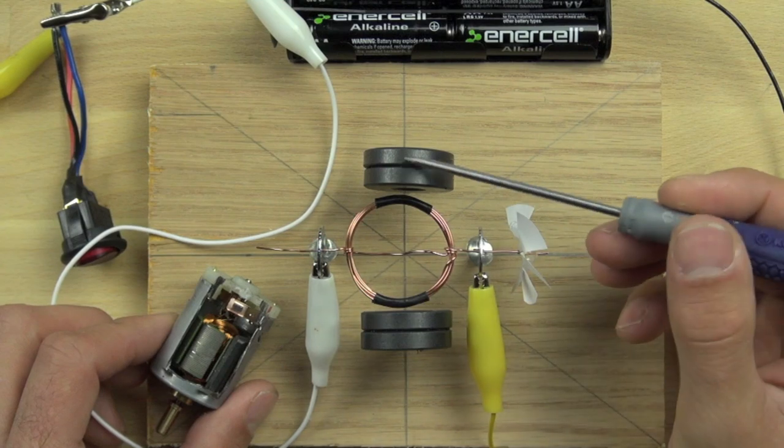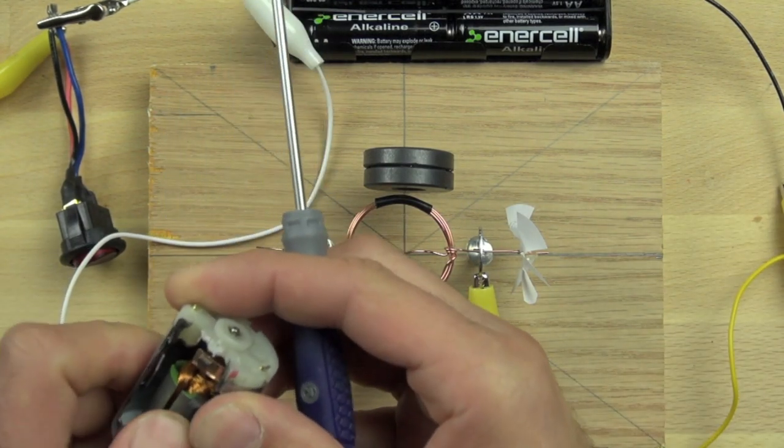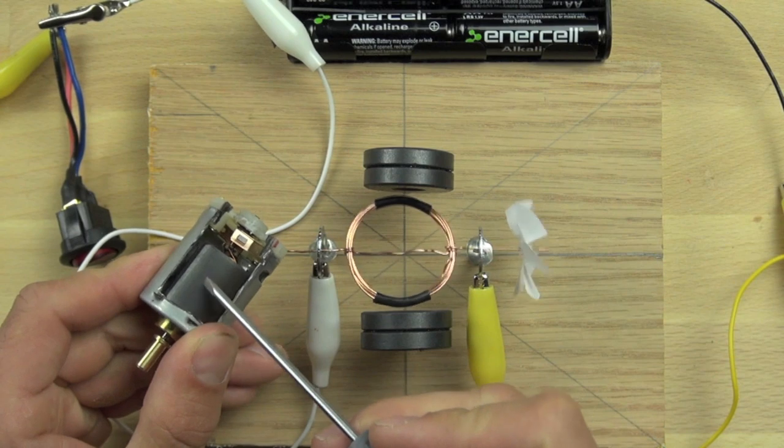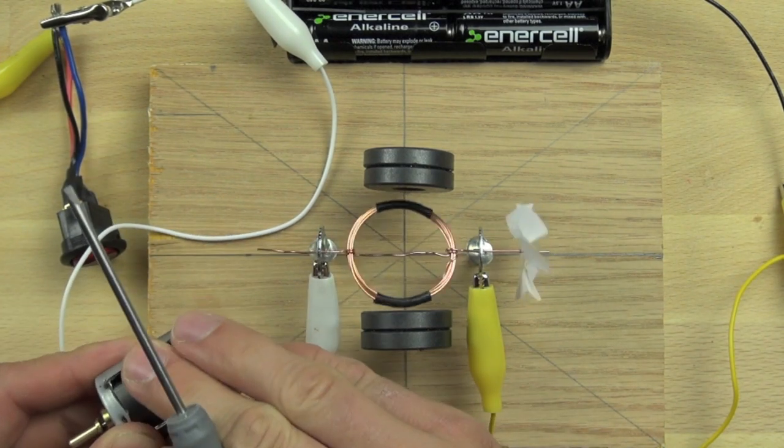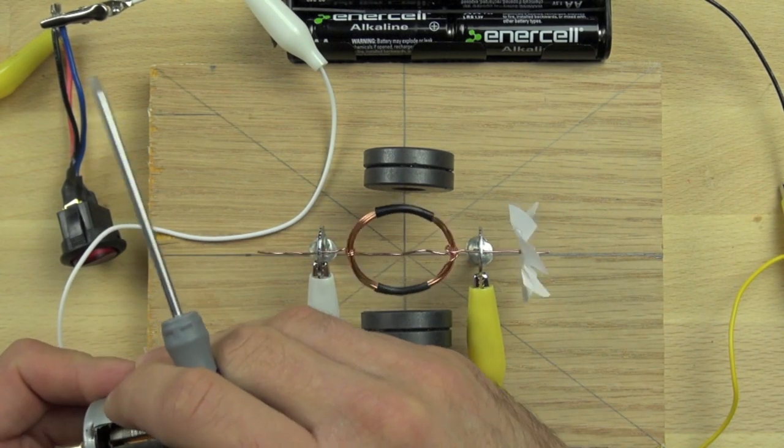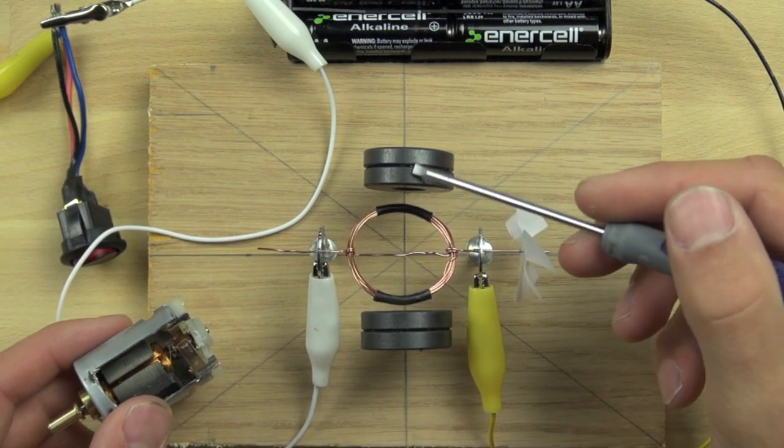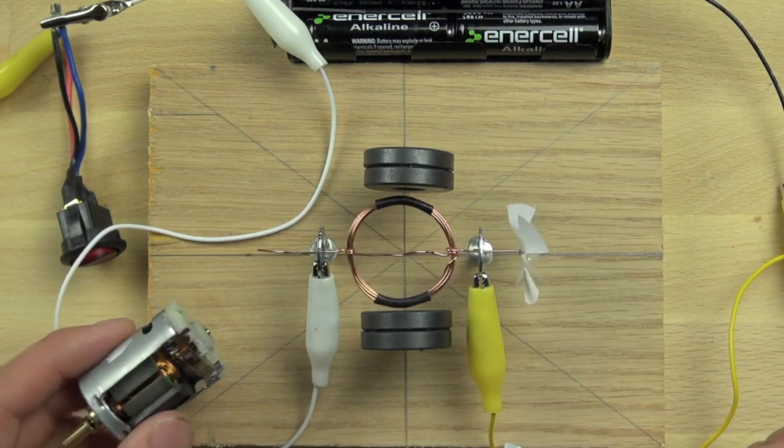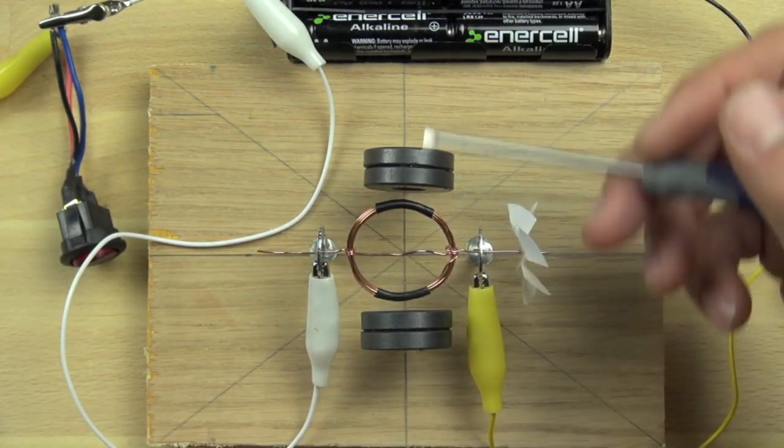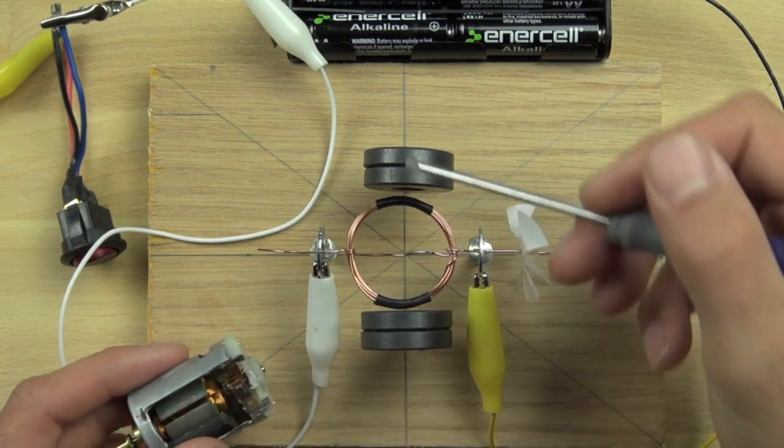So these are our permanent magnets, and they are behaving just like this guy, which is the permanent magnet in our hairdryer motor. They're both opposing poles, so this is a north pole and this is a south pole magnet. If you put them next to each other, the way they're set up, they would want to snap together because opposites attract.